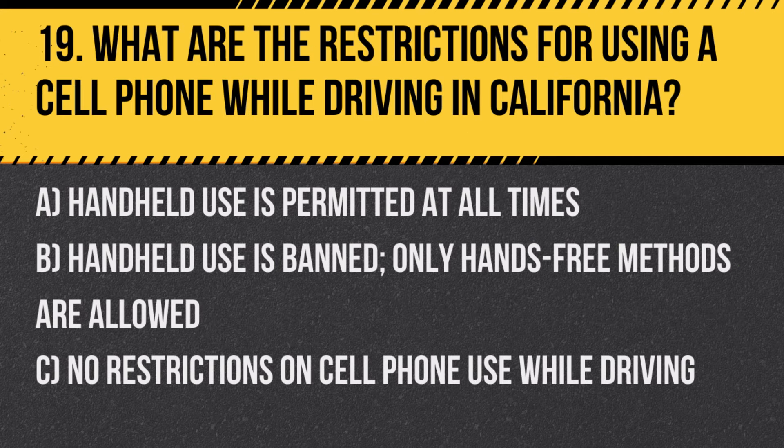Question 19: What are the restrictions for using a cell phone while driving in California? A. Handheld use is permitted at all times. B. Handheld use is banned; only hands-free methods are allowed. C. No restrictions on cell phone use while driving. Answer: B. Handheld use is banned; only hands-free methods are allowed. This law is designed to reduce distractions and increase road safety.